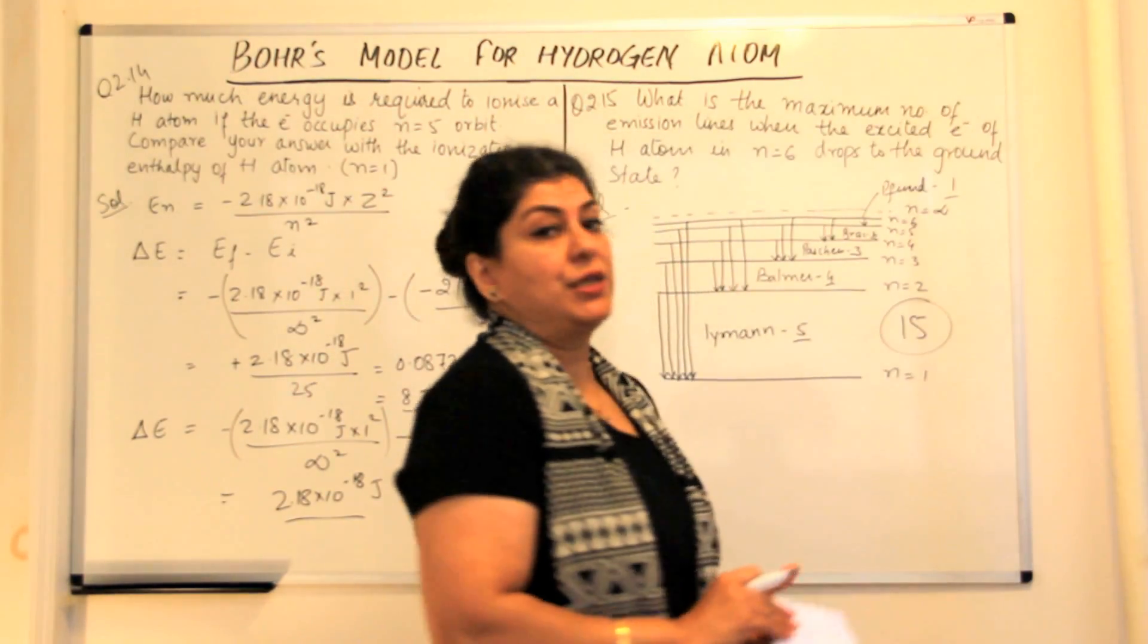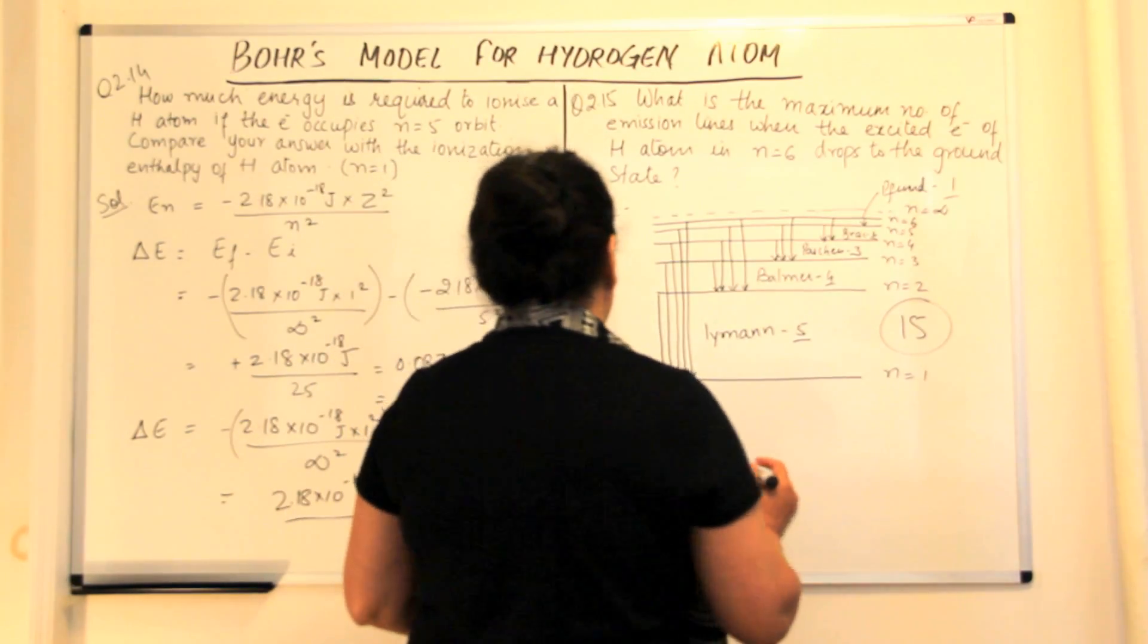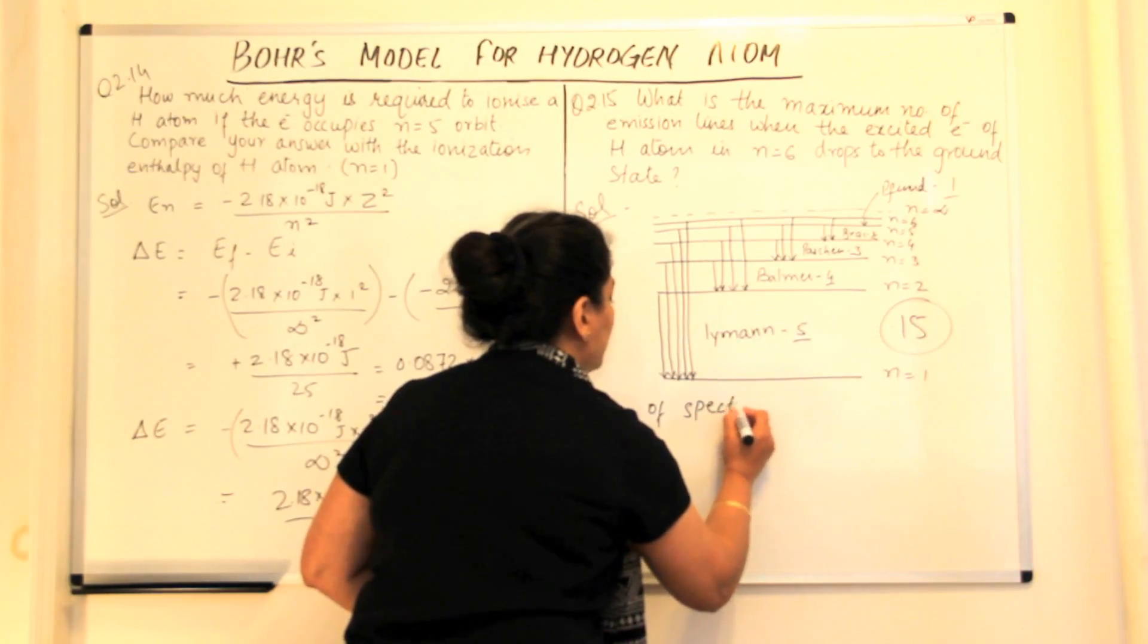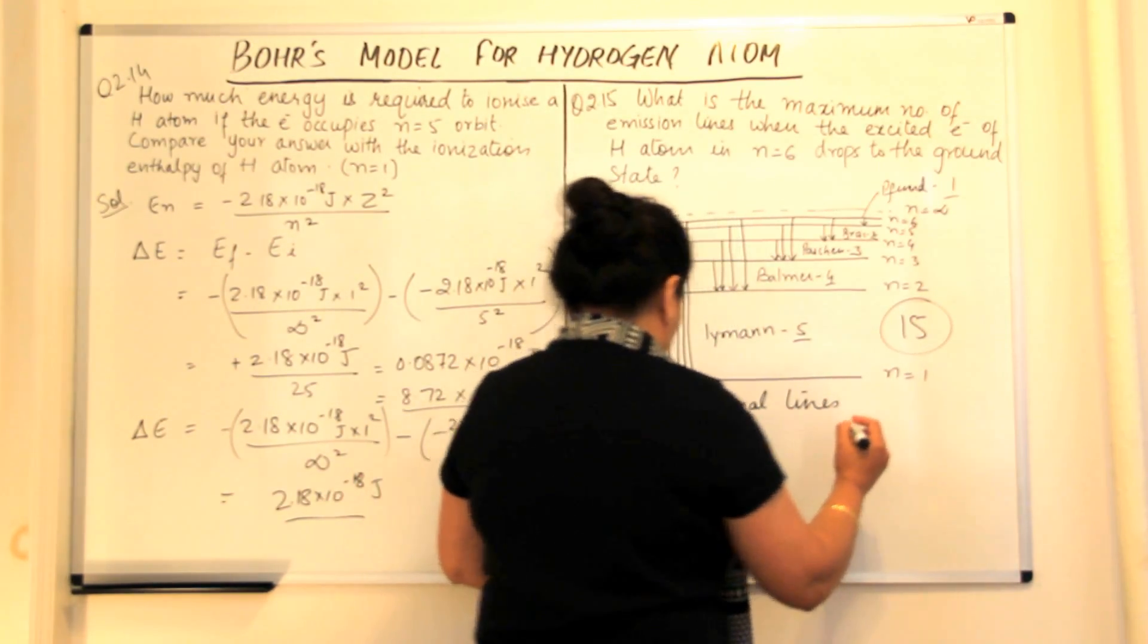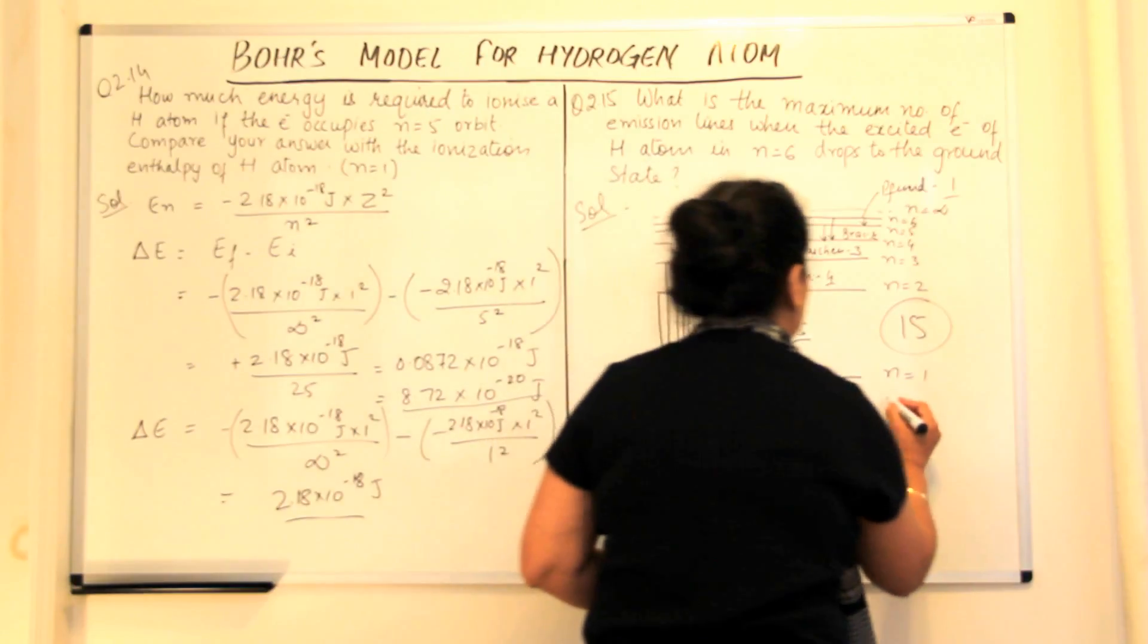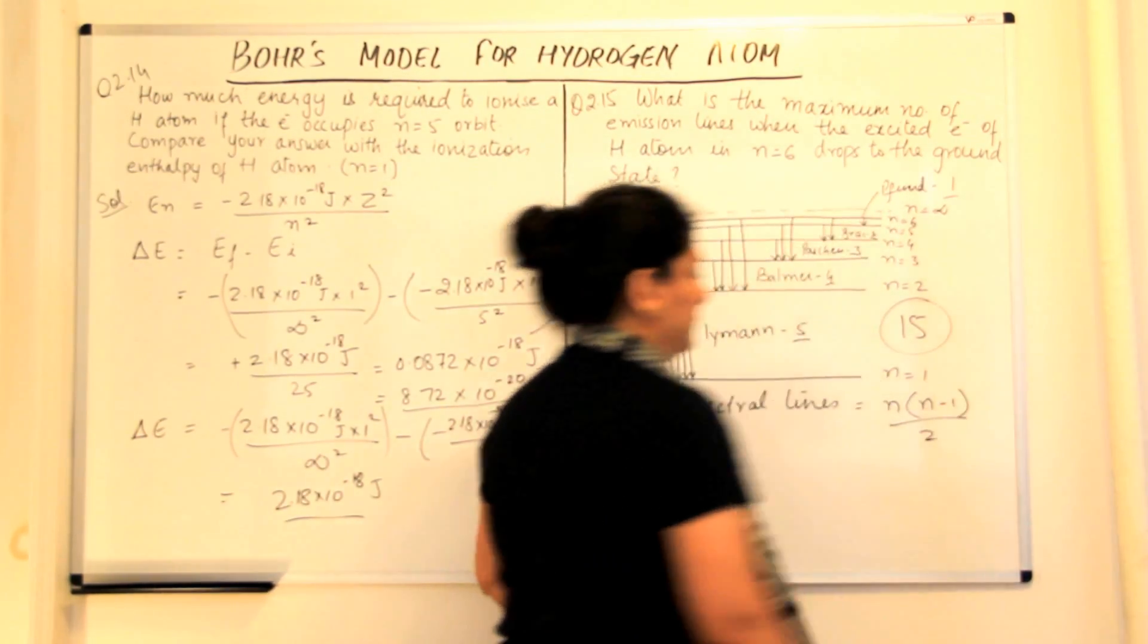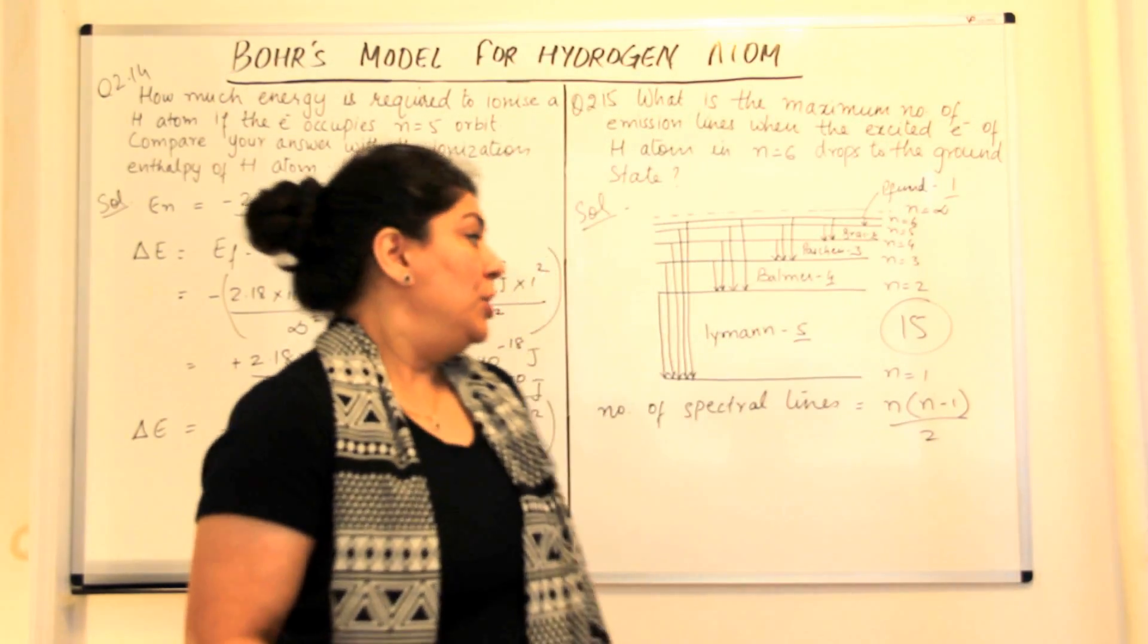There's a formula also that you can use for this. The number of spectral lines produced is given by a formula: if it moves from a shell n to one, then the formula is n into n minus one upon two.